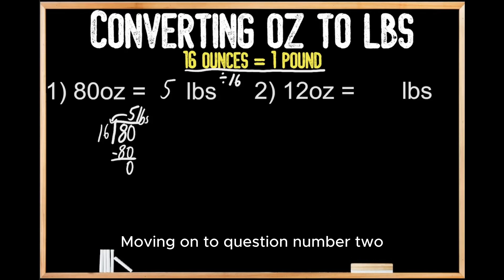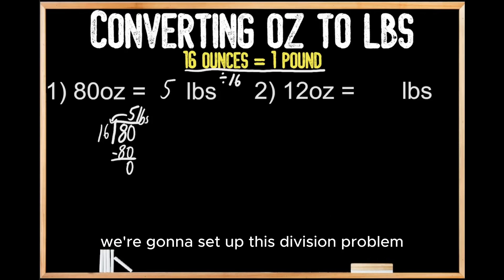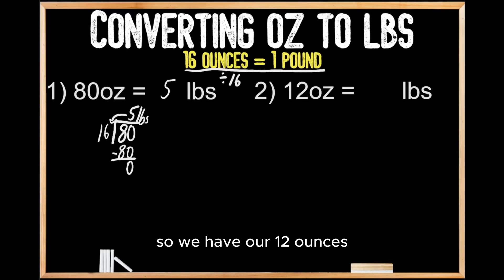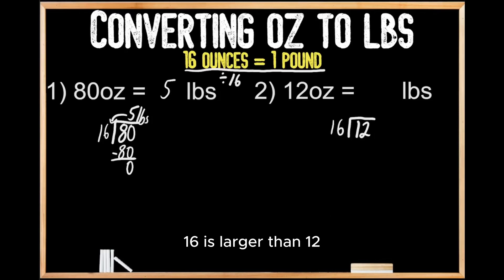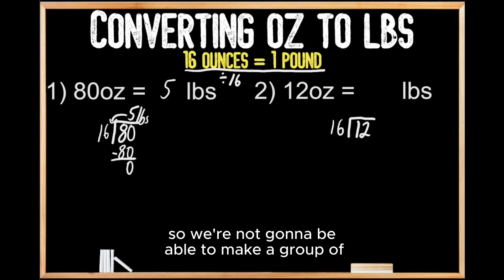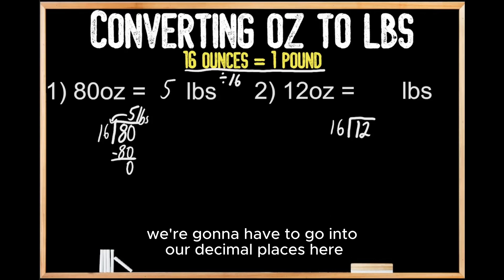Moving on to question number two, where this time we're being asked to convert 12 ounces into pounds. The first thing we're going to do is set up this division problem: we have our 12 ounces and we're going to be dividing those 12 ounces by 16. Now, obviously here 16 is larger than 12, so we're not going to be able to make a group of 16 out of 12. So in order to divide 12 by 16, we're going to have to go into our decimal places.